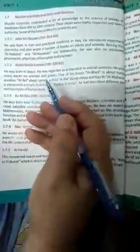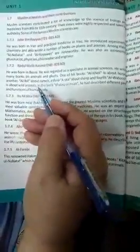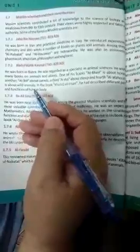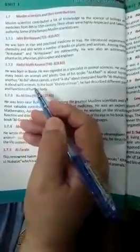And he wrote his observations in a book, Khalakul Insan. In this book, he described different parts of the human body and their function.